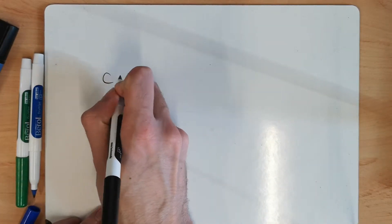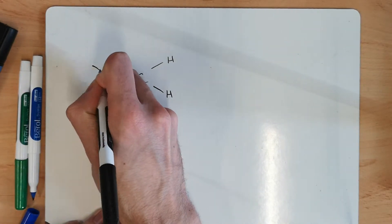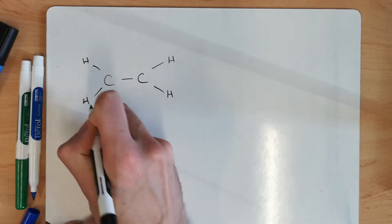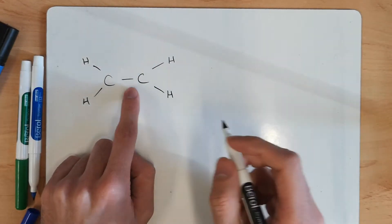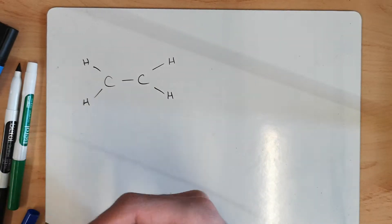So, the first thing I'm going to put into this diagram is all my sigma bonds. Again, I'm only drawing one bond between the two carbons, we know there's going to be two, but we're going to show in this diagram how that second one forms.